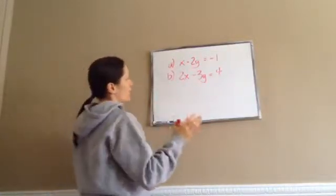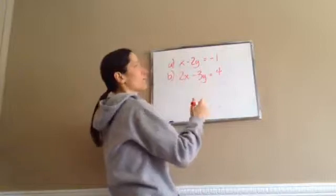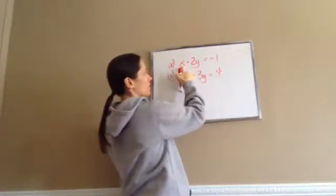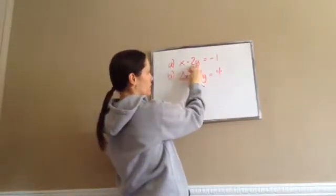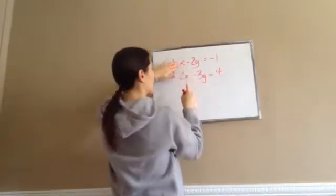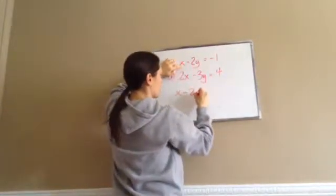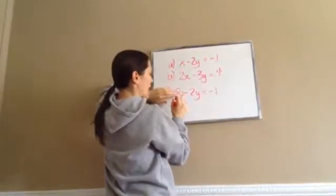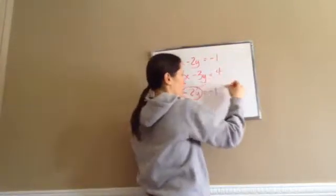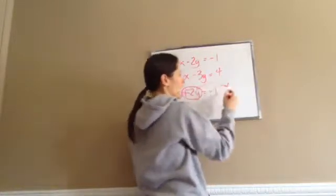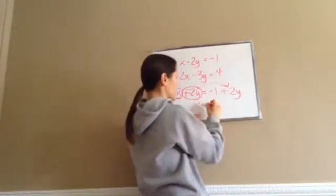The very first thing you need to do is get x on one side — not fully solved, just x by itself. Since this x doesn't have a coefficient like 2 or 3, it's best to choose equation A. We want x to equal some expression. So from x minus 2y equals negative 1, we move the negative 2y across the equals, and it becomes plus 2y. So x equals negative 1 plus 2y.